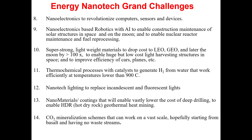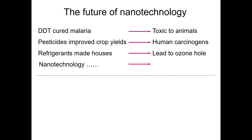The future of nanotechnology shows it can do a lot in power sectors, and is expected to do more in the near future with further development. Throughout history, alongside development in medicine and technology, there have always been pros and cons. For example, DDT was utilized to treat malaria but proved to be toxic to animals.